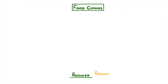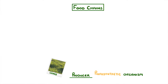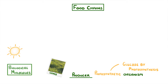All food chains start with a producer, which is some kind of photosynthetic organism like a green plant or alga — we're going to use grass here as our example. Photosynthetic means the organism can produce glucose by photosynthesis, so they're effectively using the sun's energy to make biological molecules.